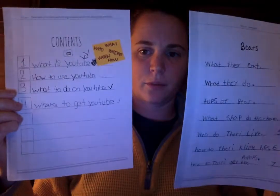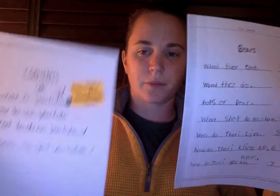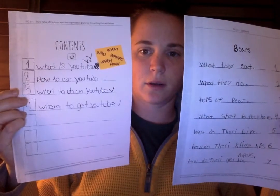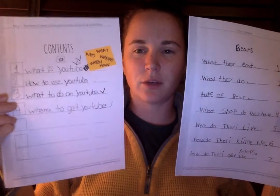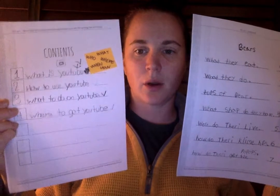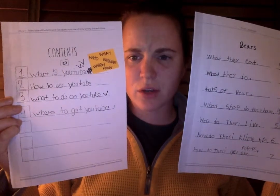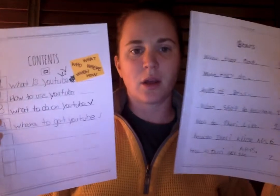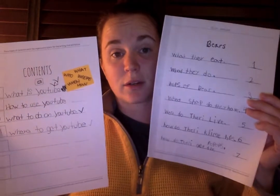Another way that writers in the past have organized their table of contents is by thinking in terms of our five W words — and of course, our how. For example, this person was researching all about YouTube, so they talked about it using those five W words: 'What is YouTube?', 'How to use YouTube?', 'What to do on YouTube?', 'Where to get YouTube?' The same approach works for a totally different topic, like bears.